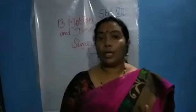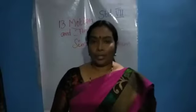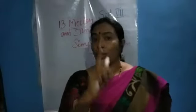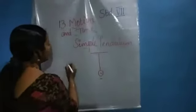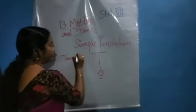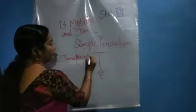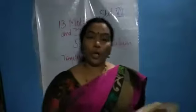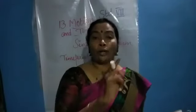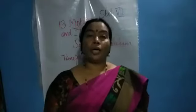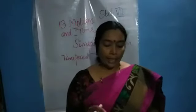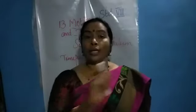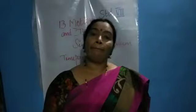We can do an activity to understand the time taken for one oscillation. The time taken for one oscillation is known as the time period of the pendulum. Oscillatory motion is the to-and-fro motion of the pendulum, and the time taken by the pendulum to complete one oscillation is called the time period.